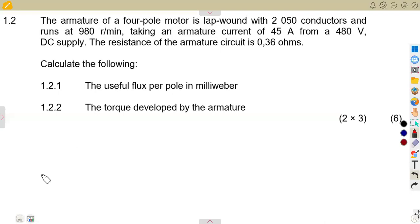Okay guys, still on our revisions of the DC machines, we need to consider typical exam questions just to make sure that we are prepared for our exams. So this is August 2019 question 1.2 that we are going to consider. The armature of a four-pole motor is lap-wound with 2050 conductors and runs at 980 revolutions per minute.